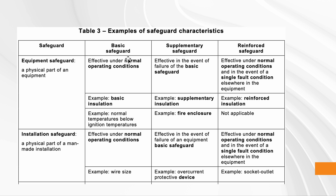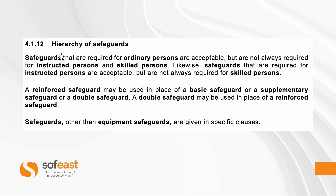For example, the basic safeguard is to ensure temperatures remain below dangerous levels — using a fan and vents to keep things cool. But if the fan stops working or the vents are blocked, you also need a fire enclosure so that if fire starts inside the product, it is contained. If the enclosure melts or breaks too easily during a fire, you don't have an effective supplementary safeguard.